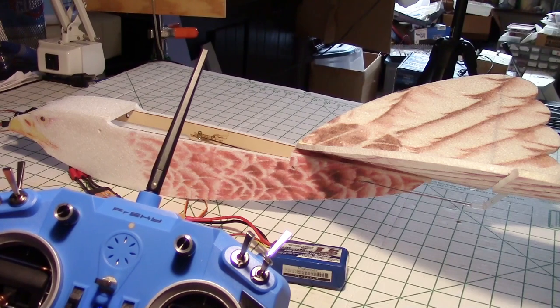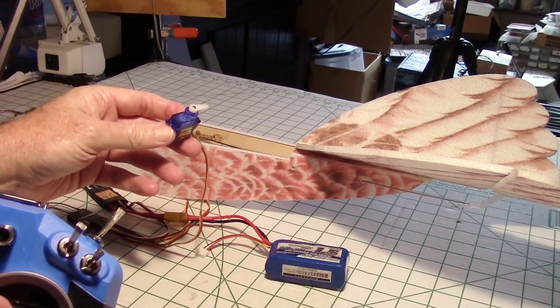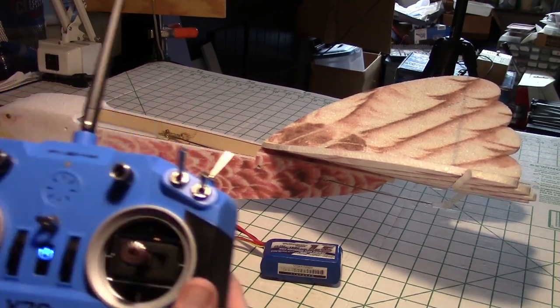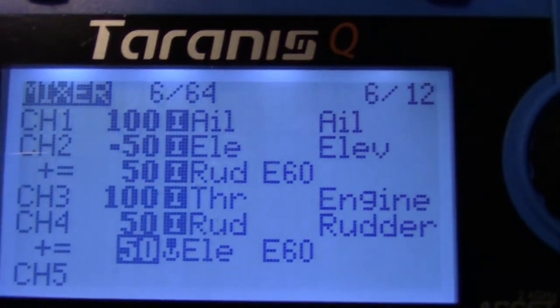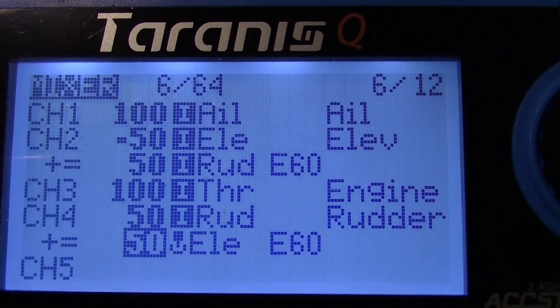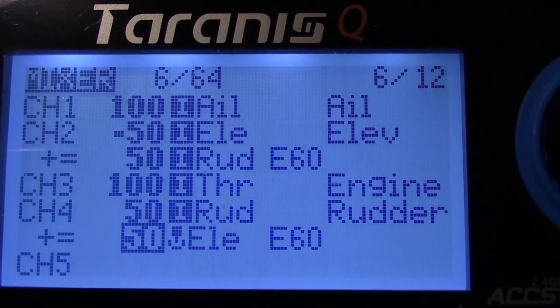You can see right here when I move my aileron stick, the aileron servo is moving. I'll probably have two of these wired out. Now if I do elevator, you can see that working. And if I do rudder, you can see that action. That's a V-tail setup. And that's why I've got 50% here on these, the two channels, channel 2 and channel 4, which is the elevator and the rudder, are 50% mix on each one, mixed into each other.